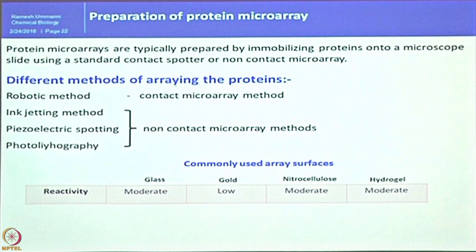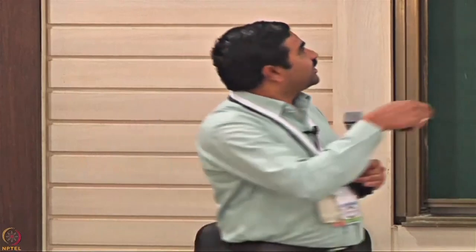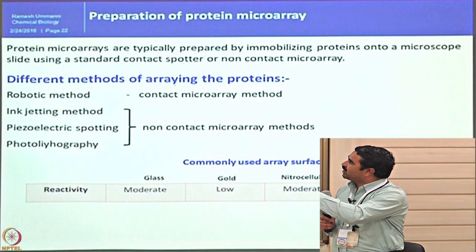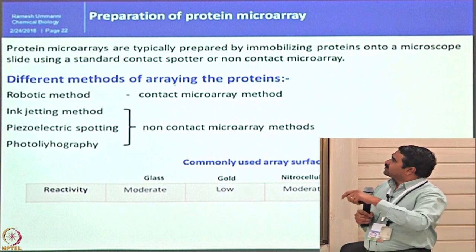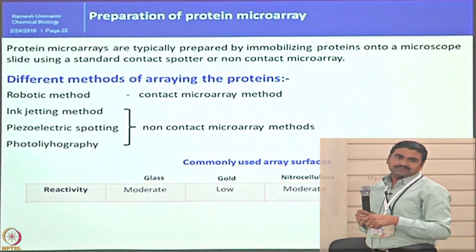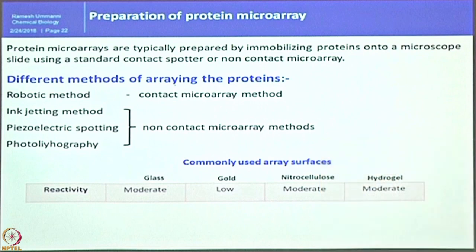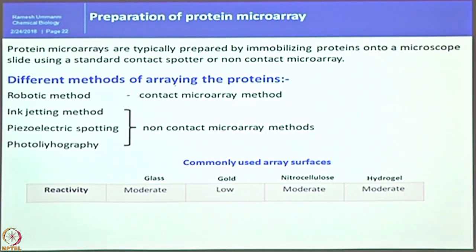The inkjet method sprays the sample near the glass slide, which can produce wider spots than concise spots, accommodating fewer samples per slide compared to contact methods. You can use a wide array of substrates, but in RPPA we need matrix-coated glass slides. The matrix can be glass directly, gold, nitrocellulose, or hydrogel. Nitrocellulose is preferred because it gives low background and low fluorescence during detection, and has very high surface absorption. This is why most people use nitrocellulose-coated slides.